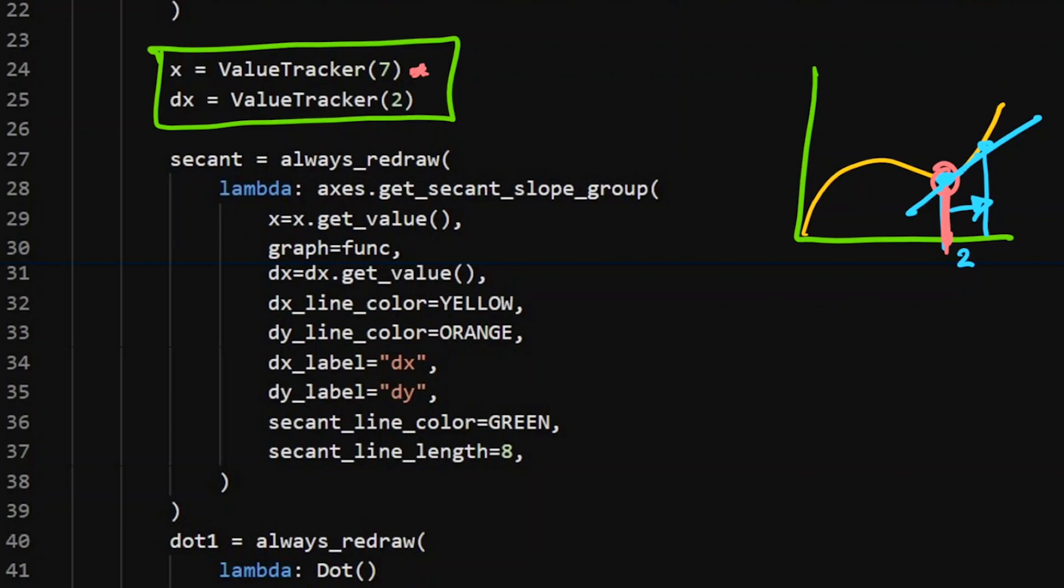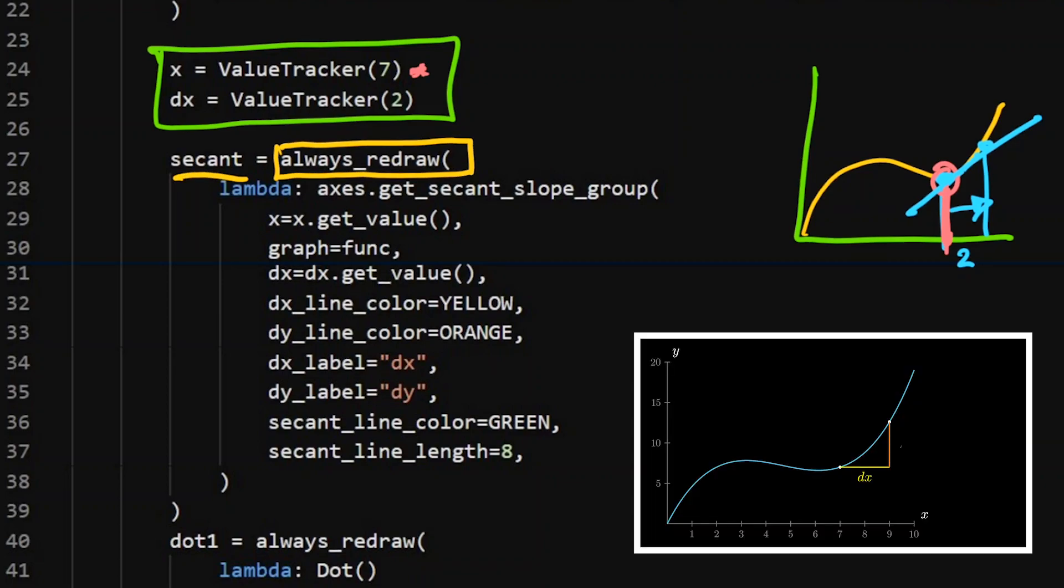So you can see right here, always_redraw. This is going to be my secant. Now this is an inbuilt, you don't have to create this one yourself. This is inbuilt to the coordinate system where you've got this get_secant_slope_group. It's going to give you a whole bunch of stuff.